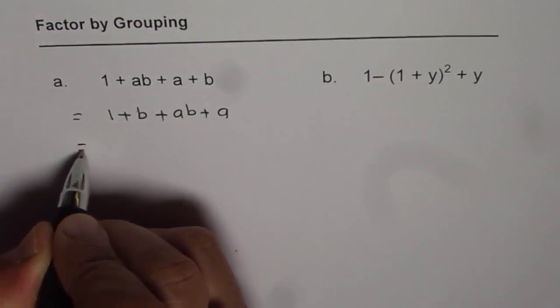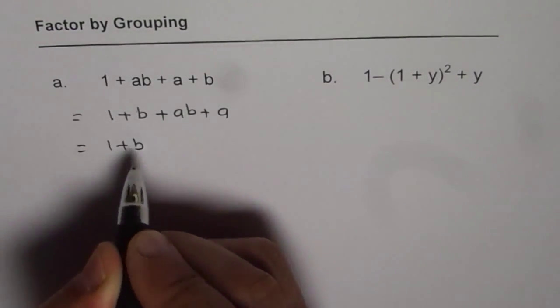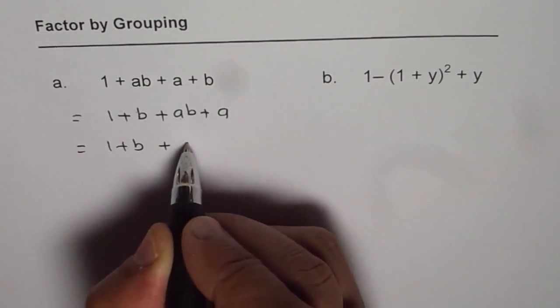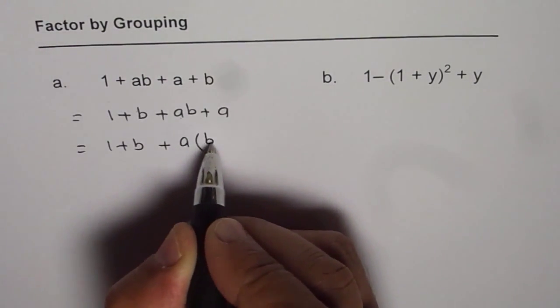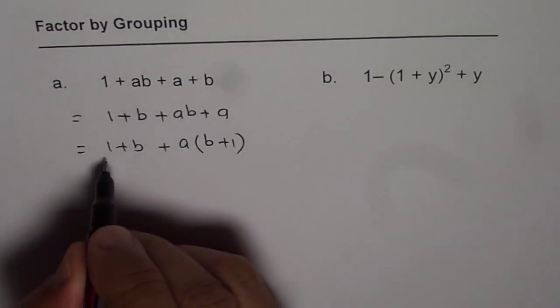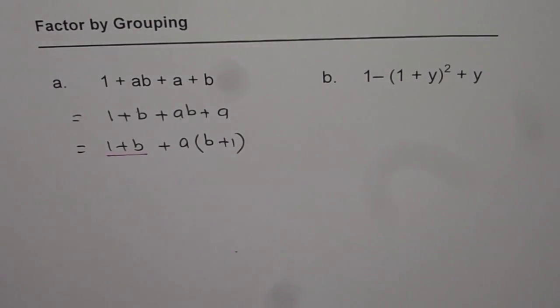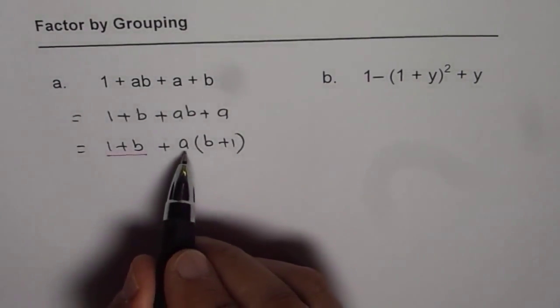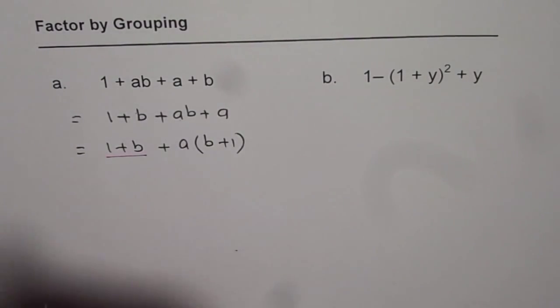Now, so we have 1 + b and from ab and a we can have a common factor of a. So we get a(b + 1). Now, as you can see, we have b + 1 here also. So these two can be treated as one term. And then the other term is a times b + 1.